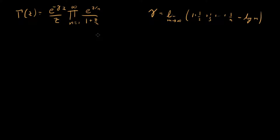One thing to note is that this product definition is a little nicer than the Euler product definition of the gamma function, because here you have exponentials which are easy to multiply together. In the other one you have a 1 plus 1 over n raised to the z in your product which is a little harder to work with. So this definition ends up being one of the more useful definitions of the gamma function.